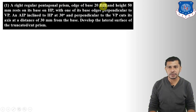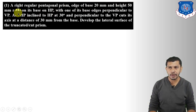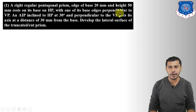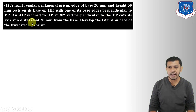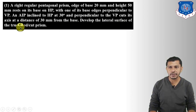The first problem: a right regular pentagonal prism with base edge 20 mm and height 50 mm rests on its base on HP with one of its base edges perpendicular to VP. An AIP (auxiliary inclined plane) inclined to HP at 30° and perpendicular to VP cuts its axis at a distance of 30 mm from the base. Develop the lateral surface of the truncated cut prism.